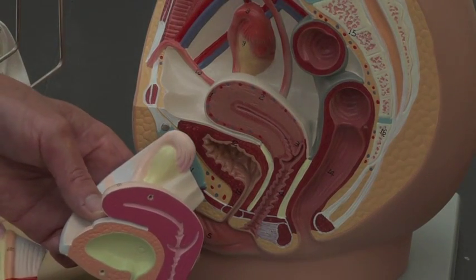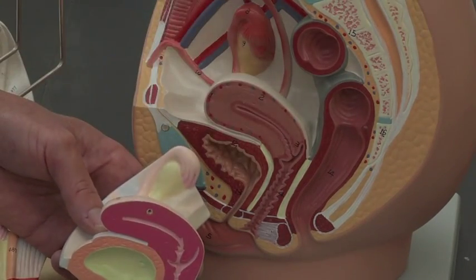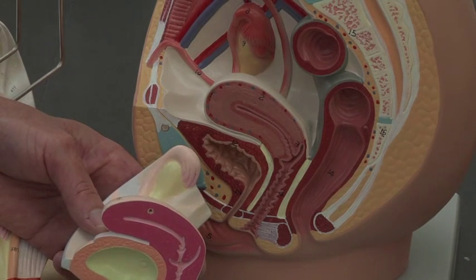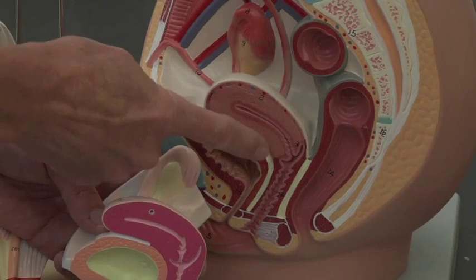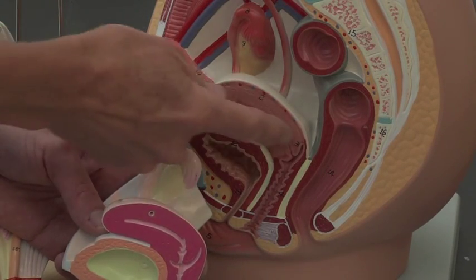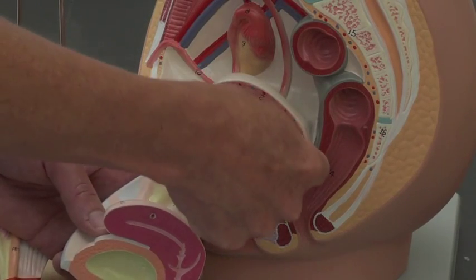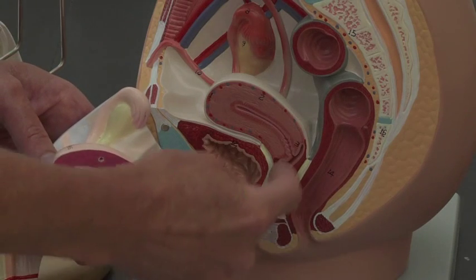Of course you want this thick muscular layer because that's going to expand out as the baby grows, but then when it gets time to get rid of this baby and get it out, those muscles are going to start contractions. Those myometrium myometrial contractions will push the baby out through the cervix and then down through the vagina and out of the body.